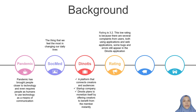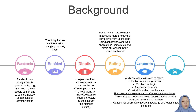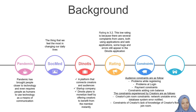After some time in usage, Dinotis received a low rating of 3.2. The constraints come from two sides. From the audience side: problems while registering, problems at login, payment issues, and problems adding coin balance. From the creator's point of view: constraints joining rooms, network instability errors, database system errors, and lack of creator knowledge about joining rooms.